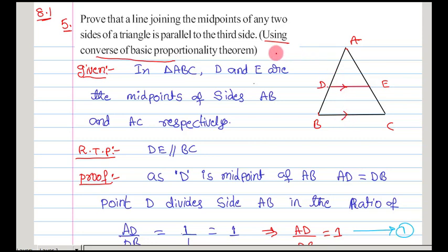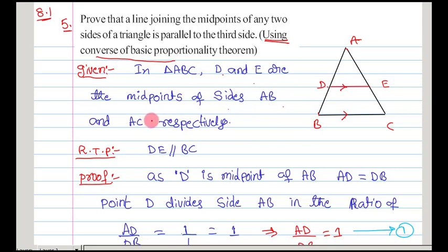For that, we need to use the converse of basic proportionality theorem. In the examination, they will not give you this hint — you need to understand that we have to use the converse of basic proportionality theorem. In the given part: in triangle ABC, D and E are midpoints of sides AB and AC respectively. And they are asking us to prove that DE is parallel to BC.